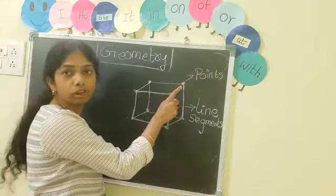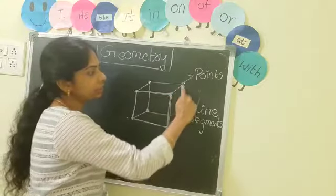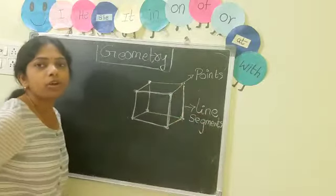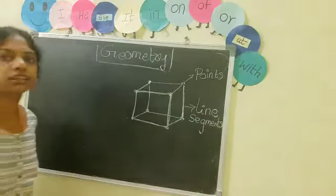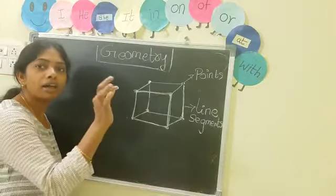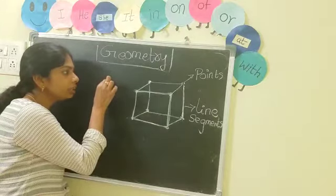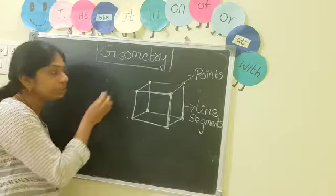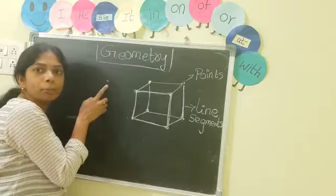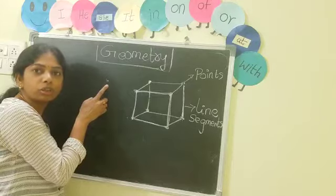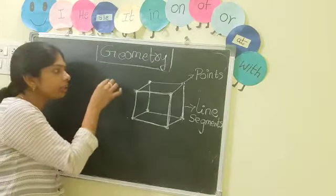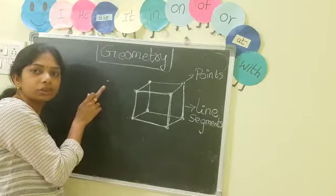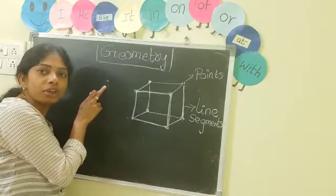Got it, children? These vertices are called points, and these edges are called line segments. What is a point? So when you mark a dot on the sheet of paper, that dot is called a point.